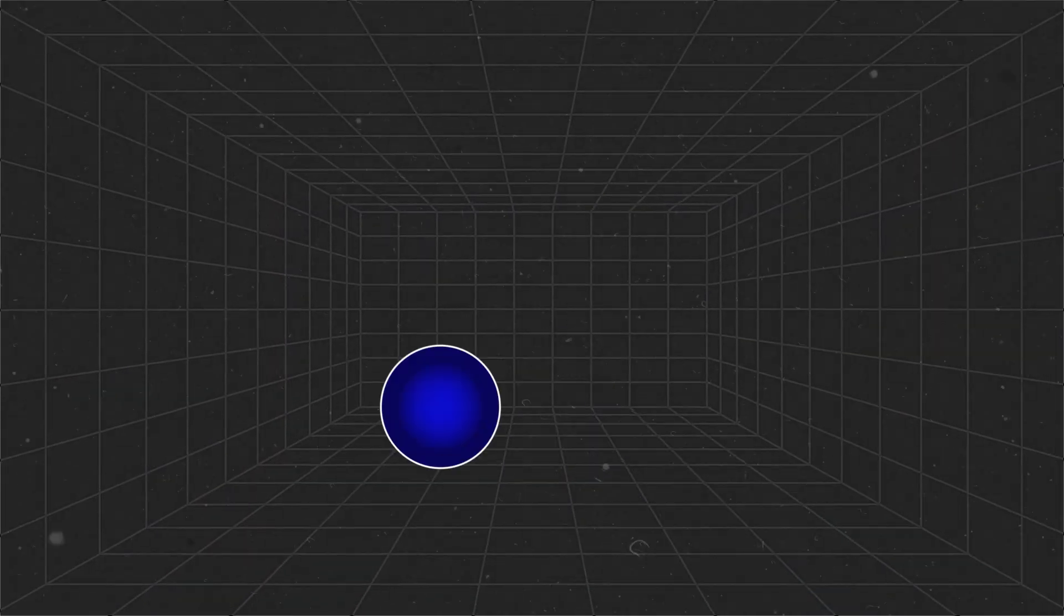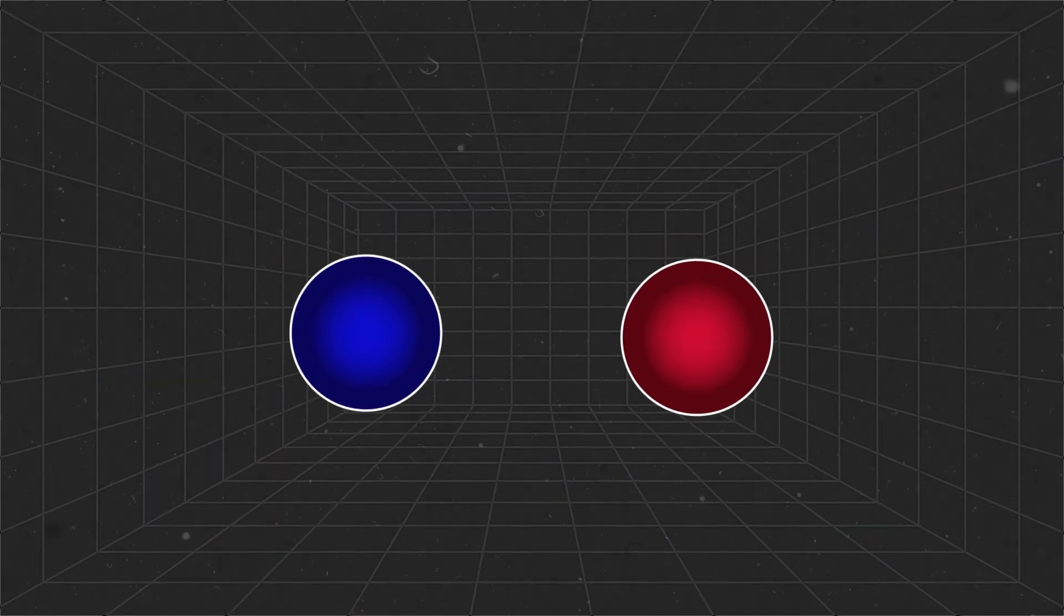In theory, every particle of matter we see around us should have an antimatter companion, an antiparticle, that is virtually identical to itself but with the opposite charge.